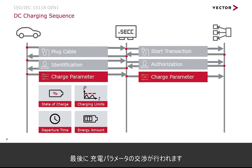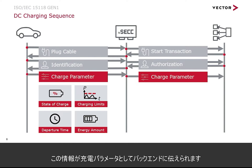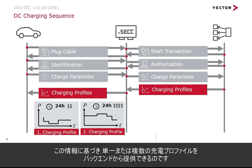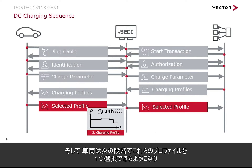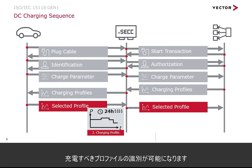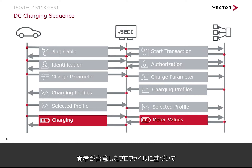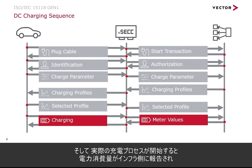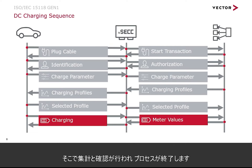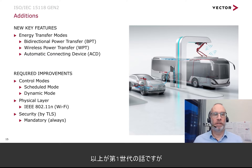Then we can negotiate the charging parameters — such as state of charge, charging limits, or energy amount — and this information is handed over to the back end as charging parameters. The back end is then able to deliver one or several charging profiles. The vehicle selects one of these profiles, and the vehicle and infrastructure side agree on the selected profile. The actual charging process then starts, metering values are reported to the infrastructure side, gathered and acknowledged there.